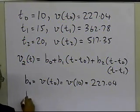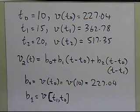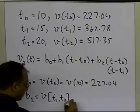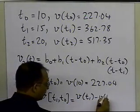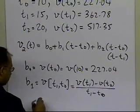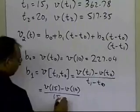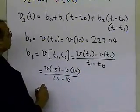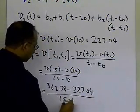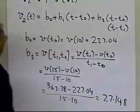To find b1, it is the first divided difference between t1 and t0: [v(t1) − v(t0)] / (t1 − t0). That is (362.78 − 227.04) / (15 − 10), which turns out to be 27.148. So b1 = 27.148.